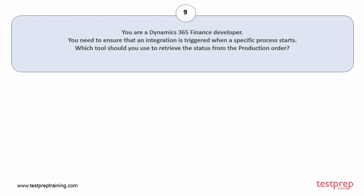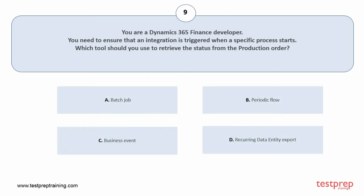Question number 9. You are a Dynamics 365 Finance developer. You need to ensure that an integration is triggered when a specific process starts. Which tool should you use to retrieve the status from the production order? Your options are: A. Batch Job. B. Periodic Flow. C. Business Event. D. Recurring Data Entity Export. The correct answer is option C.